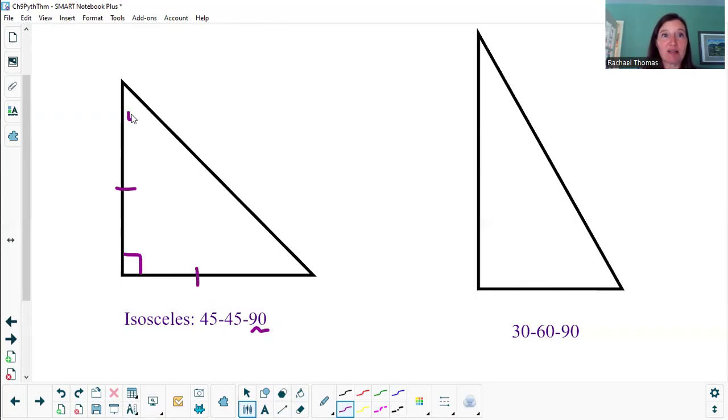You might remember isosceles means that two sides and two angles of this triangle are going to be congruent to each other, so in this case those congruent angles each measure 45 degrees. 45 plus 45 plus 90 makes 180. There's a special right triangle.